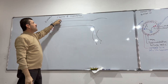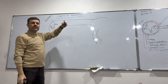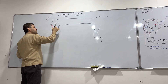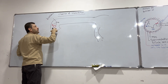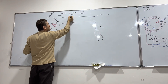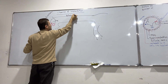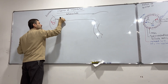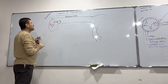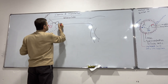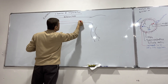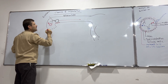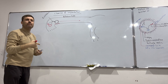Cleavage and implantation both occur after fertilization, which occurs within the fallopian tube. After fertilization, the zygote begins a series of mitotic divisions.